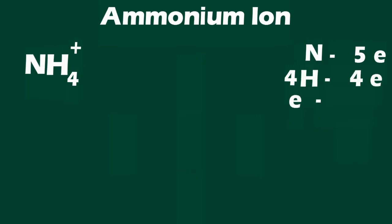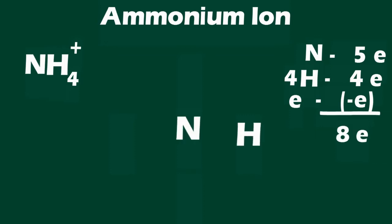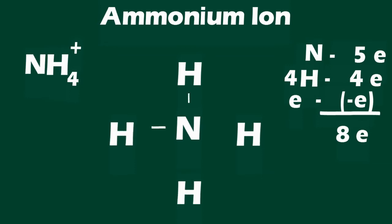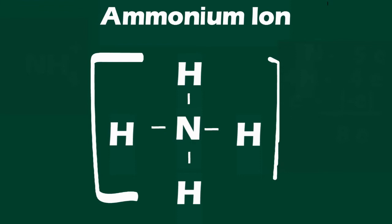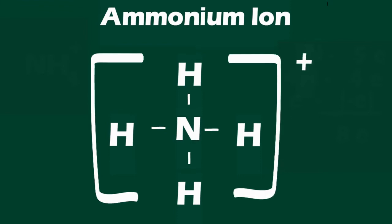The ammonium cation has eight valence electrons. When drawing the Lewis structure for ammonium, remember that hydrogen atoms are always terminal. Once you have finished distributing electrons and have completed the Lewis structure for an ion, draw square brackets around the Lewis structure and place the overall charge as a superscript in the top right-hand corner.